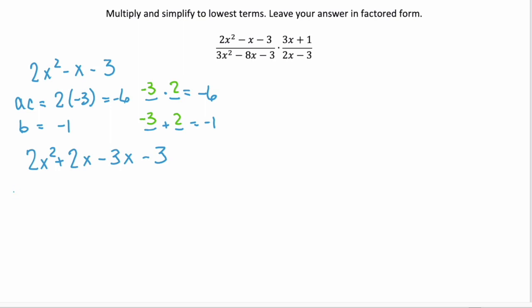Now we can factor with grouping. The first grouping we factor out a 2x and we have x plus 1. And the second grouping factor out negative 3 and we have x plus 1. Factor out that binomial x plus 1 that they have in common, and you have the binomial 2x minus 3.